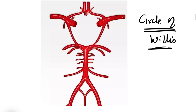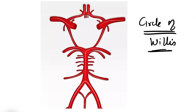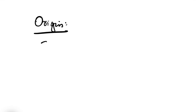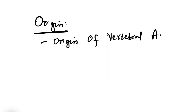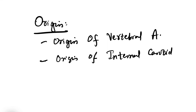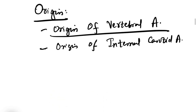Right and left vertebral arteries and right and left internal carotid arteries — together four arteries — supply the brain by forming the Circle of Willis. Now let us discuss in detail the origin of all these blood vessels, starting with the vertebral arteries and internal carotid arteries, from where they originate and how they form the Circle of Willis.